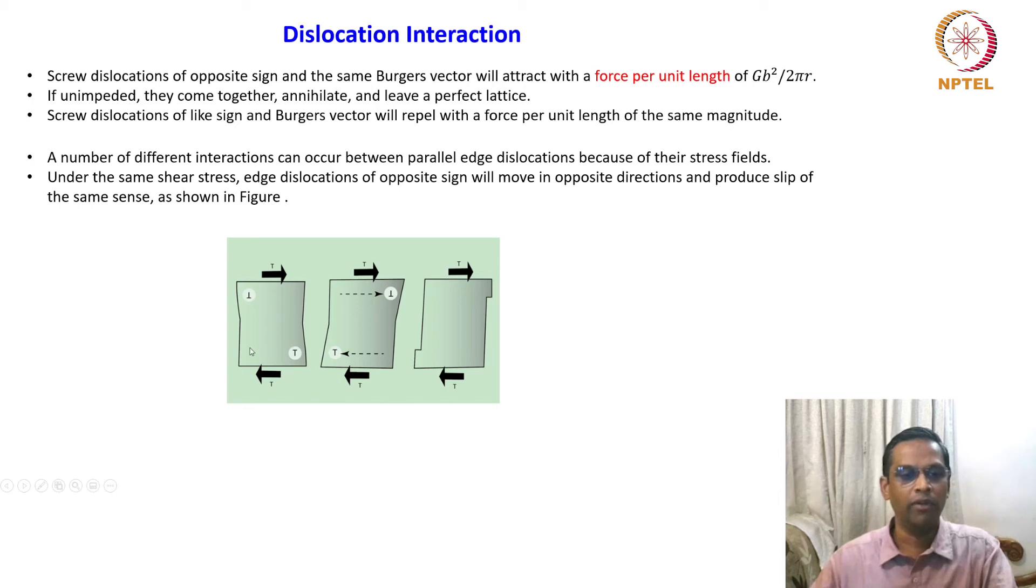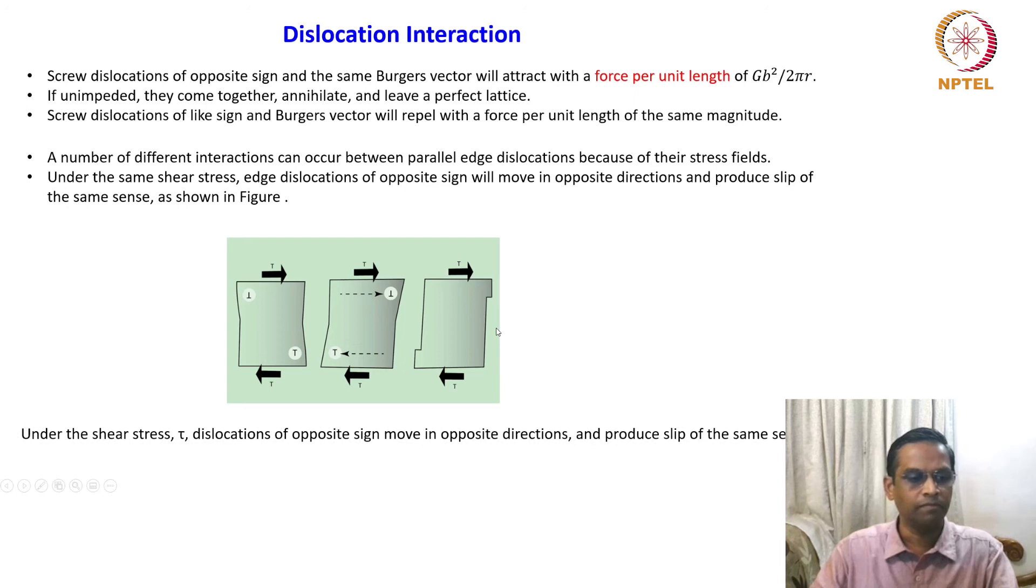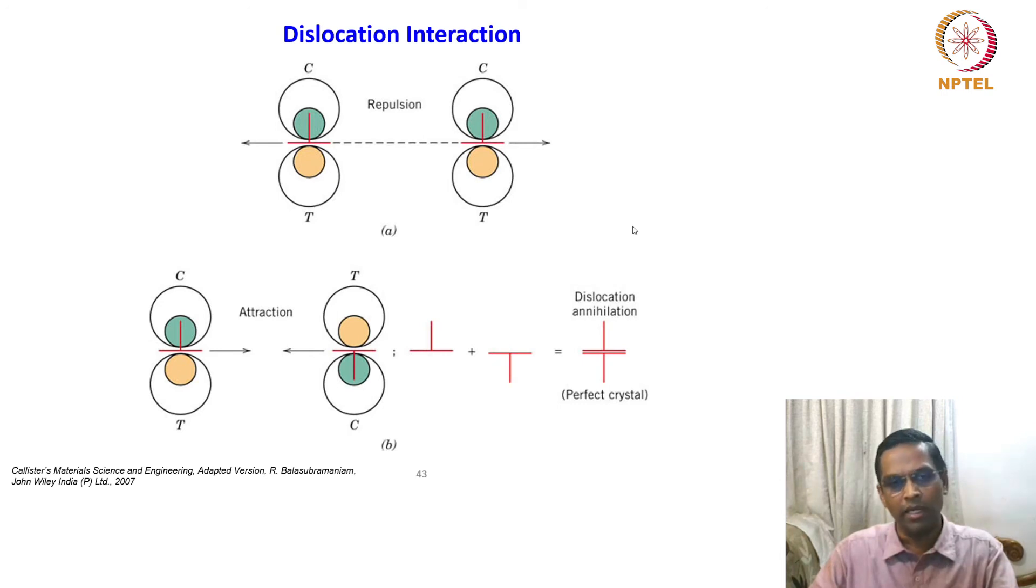Suppose if you have two edge dislocations of opposite sign like this and the shear stress is applied in this direction, then they will move in opposite directions. When they leave the crystal, a slip step is left on the crystal or lattice.